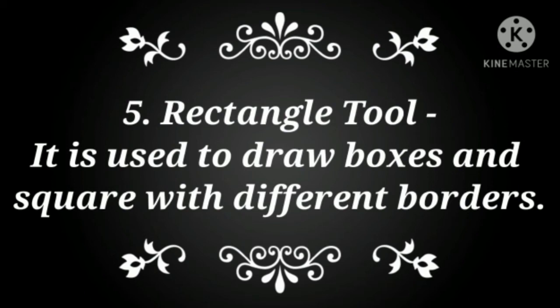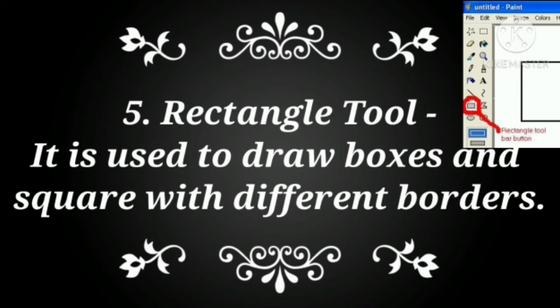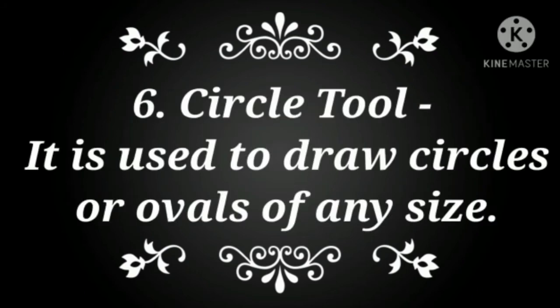Number five: Rectangle Tool. It is used to draw boxes and squares with different borders. Why is the Rectangle tool used? If we need to draw a box or a square with different borders, we use the Rectangle tool.